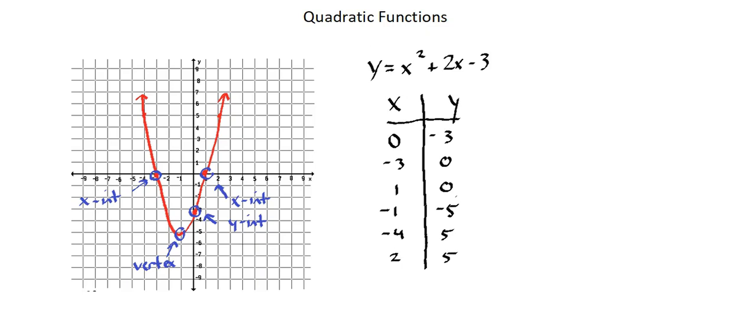And one additional characteristic we want to identify is the vertical line which passes through the vertex, which is known as the axis of symmetry. So here, the vertical line passing through the vertex is the axis of symmetry, which will always be a line with the equation x equals the x-coordinate of the vertex.